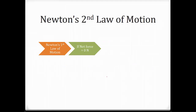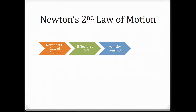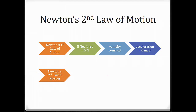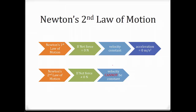To summarize: Newton's first law — net force equals zero, velocity constant, acceleration equals zero. Newton's second law is: if net force is not equal to zero, which means that velocity cannot be constant. And if velocity is not constant, acceleration is not equal to zero.